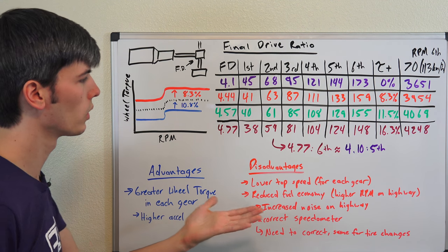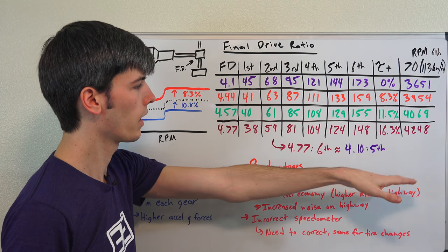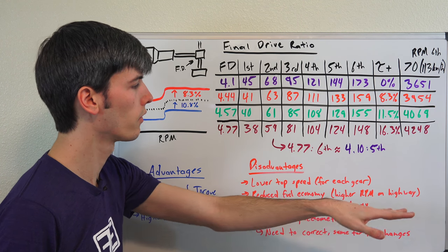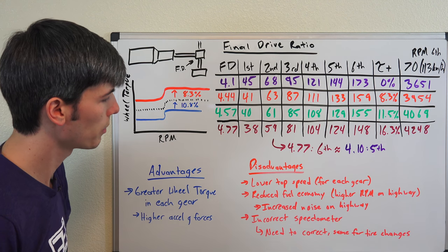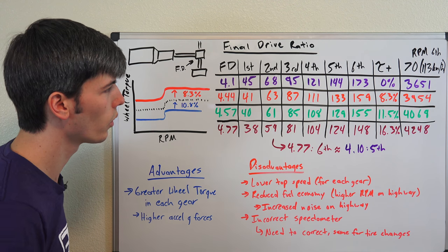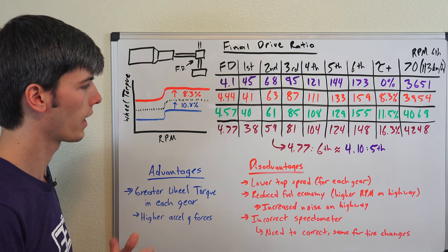You're going to get reduced fuel economy because on the highway you're going to be traveling at a higher RPM. So you're going to tend to have more friction losses at higher RPM and get worse fuel economy.